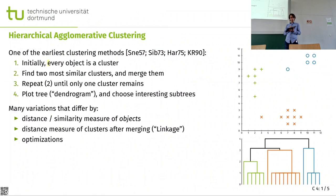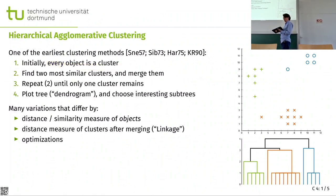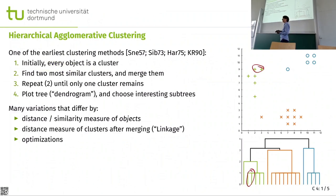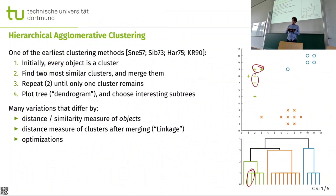The idea is that initially every object is a cluster on its own. Then we find the two most similar objects and merge them into a new cluster, and then we repeat this. In the example at the bottom, you may find that these two points are the most similar — they have a distance of 1, so we merge them. These two also have a distance of 1, so we merge them. And these two have a distance of 1, so we merge them at a distance of 1.